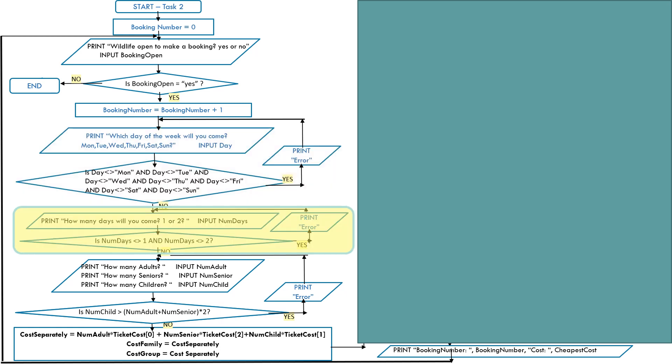Print: 'How many days will you come? One or two?' Input the number of days. We also have a validation check: is the number of days not equal to 1 and the number of days not equal to 2? If that's true, print error and prompt them to input the number of days again. If no, they've typed a 1 or 2 and we have valid input.